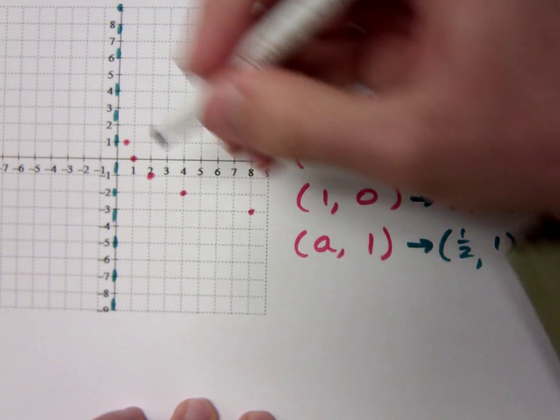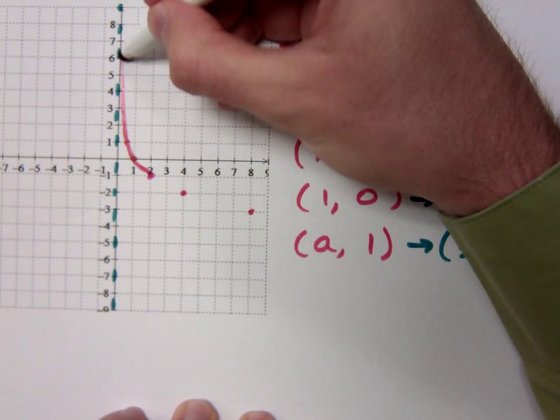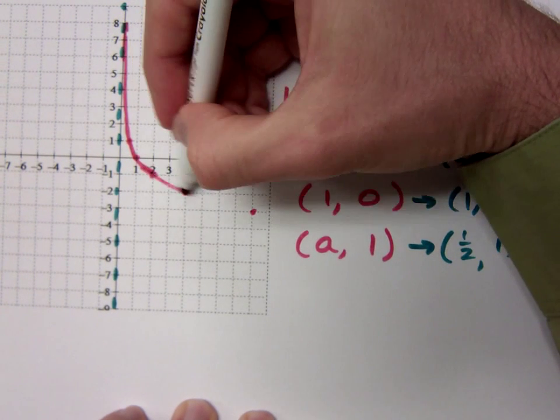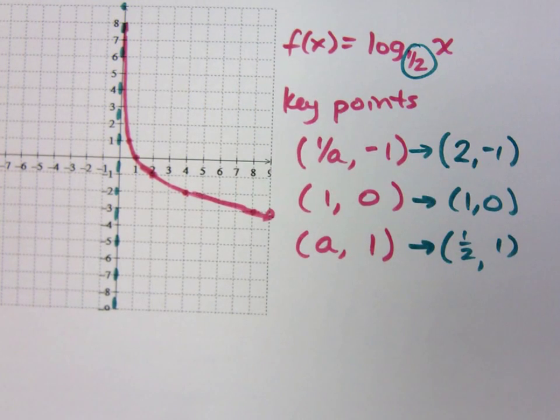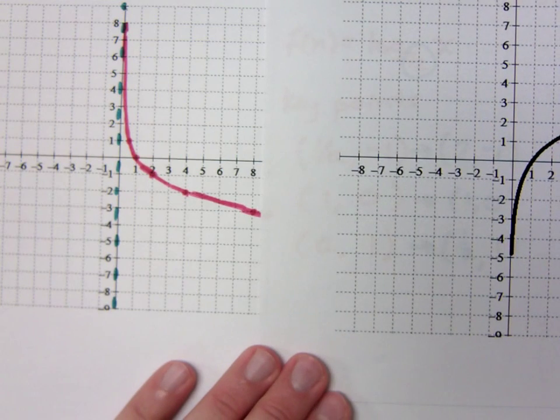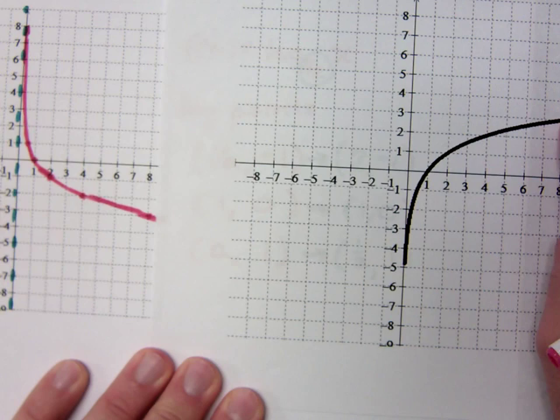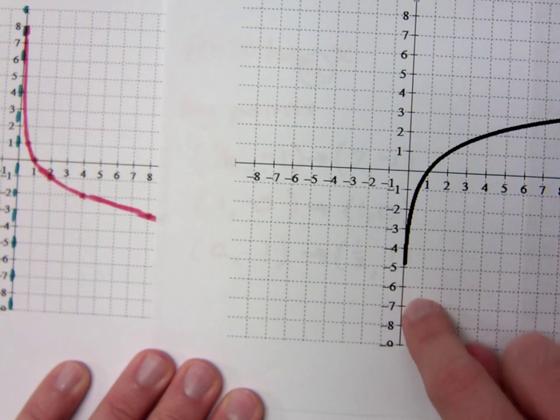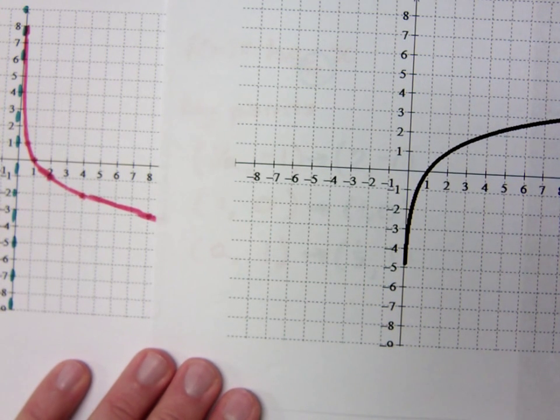So it's just like the other guy, except he's been flipped how? Look at what we had for the other logarithmic function, with a base 2. Notice how this guy was going up and over to the right, but this guy's going down and to the right. So it's the same thing as this, but I've just done what? I flipped it upside down, yeah.